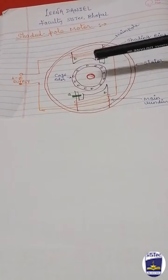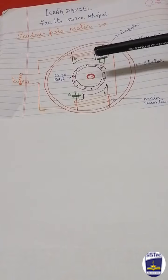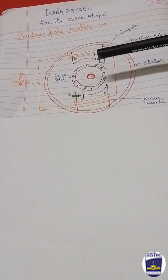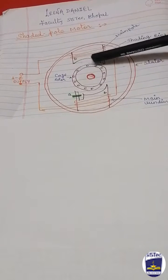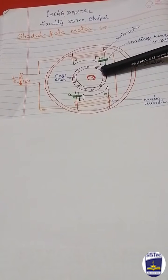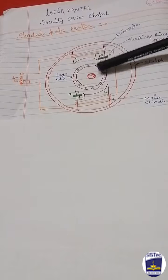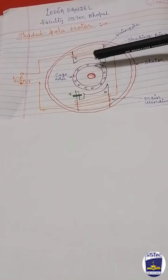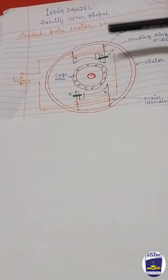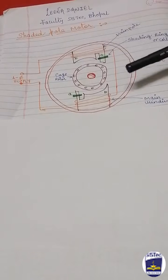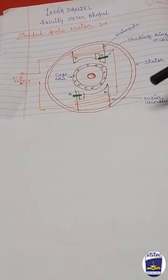The direction of this rotating field is from the unshaded portion to the shaded portion of the pole. In this diagram, the direction would be clockwise.